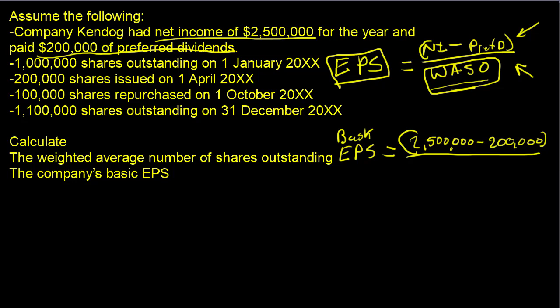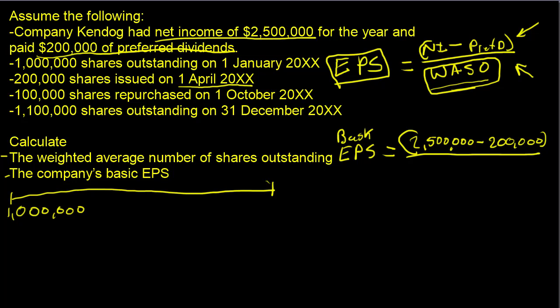The problem asks us to calculate the weighted average shares outstanding, then the company's basic EPS. Over different time periods, different things happened. At the start of the year on January 1st, there were 1 million shares outstanding. That million shares remained outstanding until the next event in April, when 200,000 shares were issued.